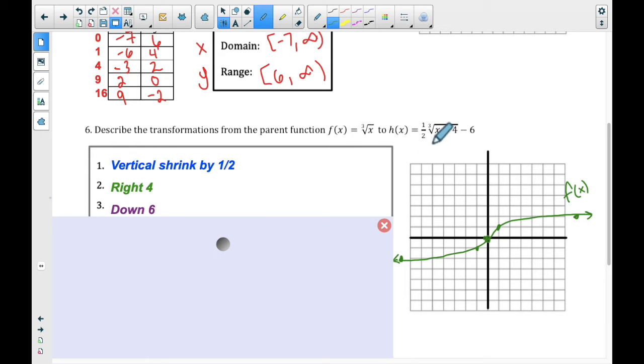All right, let's take a look. So a positive 1 half. 1 half on the outside means a vertical shrink by 1 half. Right 4, because it's minus means right, and down 6. Minus 6 means down. Okay, so now let's talk about how to put that into a table.